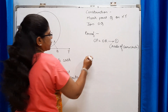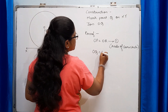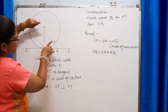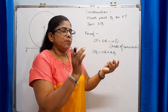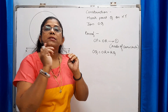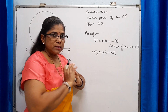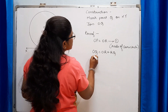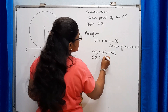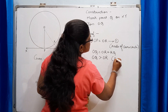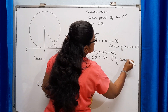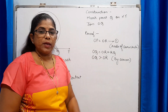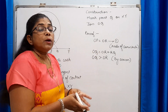Now OQ equals OR plus RQ, so this complete line OQ is OR plus RQ. In our previous class we studied the axiom that the whole is greater than its part. Here OQ is the whole line and OR and RQ are its parts, so OQ is greater than OR. Since OP equals OR, OQ is also greater than OP.